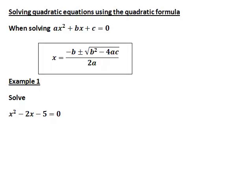In this recording we will look at using the quadratic formula to solve quadratic equations — that is, equations that can be written in the form ax squared plus bx plus c equals zero. The quadratic formula tells us that x equals negative b plus or minus the square root of b squared minus 4ac, all divided by 2a. This formula is also useful because it identifies cases where a quadratic equation has no real solutions.